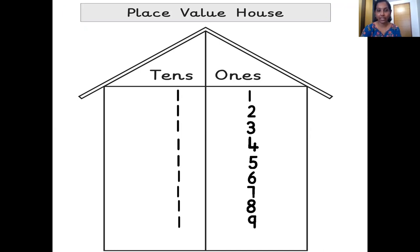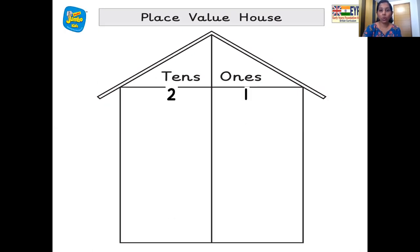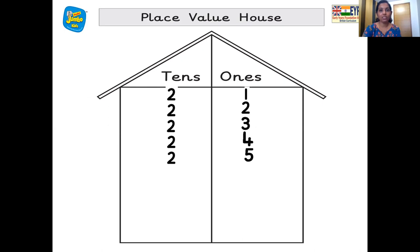And which is the next number after nineteen? Twenty! So how do we write it? Two tens, zero ones — twenty. Two tens, one ones — twenty-one. Two tens, two ones — twenty-two. Two tens, three ones — twenty-three. Two tens, four ones — twenty-four. Two tens, five ones — twenty-five. Two tens, six ones — twenty-six. Two tens, seven ones — twenty-seven. Two tens, eight ones — twenty-eight. Two tens, nine ones — twenty-nine.